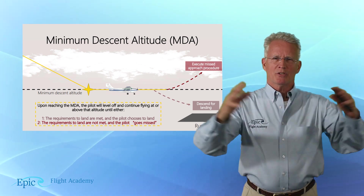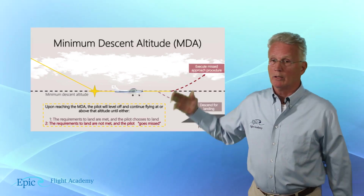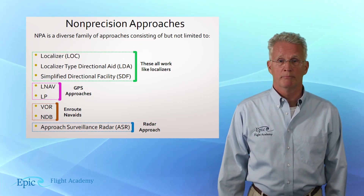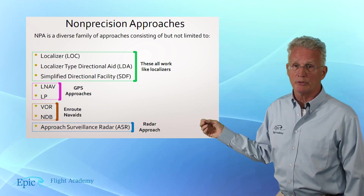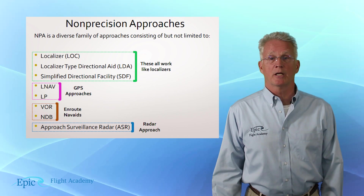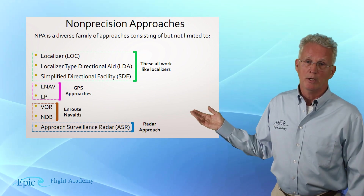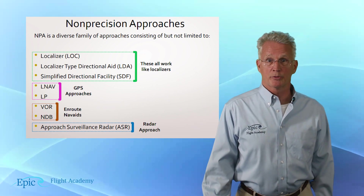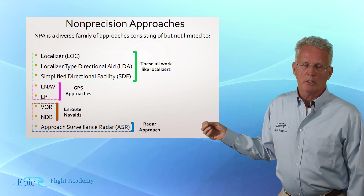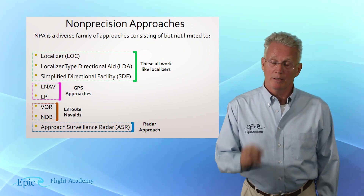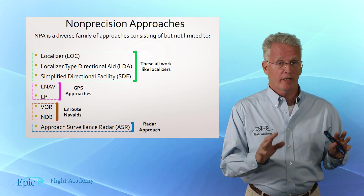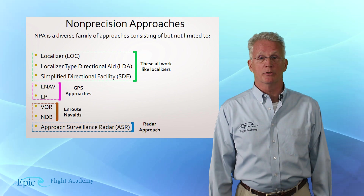So what does this diverse family of approaches consist of? In green, three approaches work like localizers: the localizer, the LDA, and the SDF. In pink, GPS approaches used as non-precision approaches: LNAV and LP. In brown, approaches using en-route NAVAIDs: VOR and NDB non-precision approaches. And in blue, the ASR, or Approach Surveillance Radar, is a non-precision radar approach.